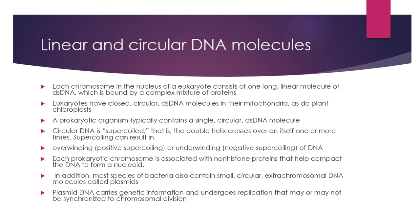DNA can exist in two structural types: linear and circular. In eukaryotes, the DNA is mainly a linear double-stranded molecule. Prokaryotes contain a single double-stranded circular DNA molecule. Eukaryotes also contain circular DNA, but only at specific locations such as mitochondria or, in plants, chloroplasts. Prokaryotes mainly contain circular double-stranded DNA, and this circular DNA is supercoiled.